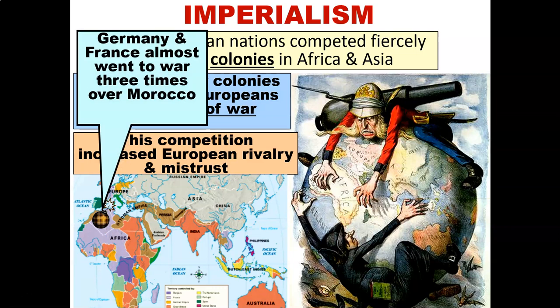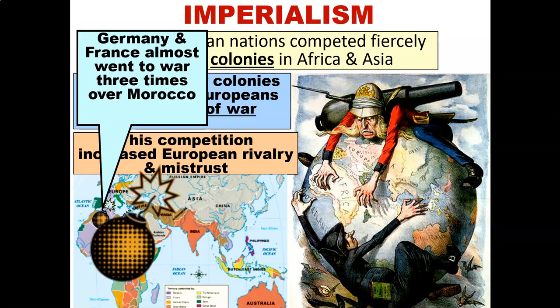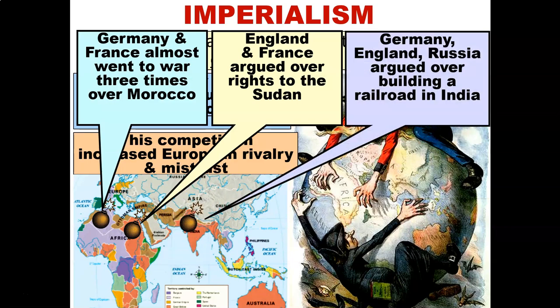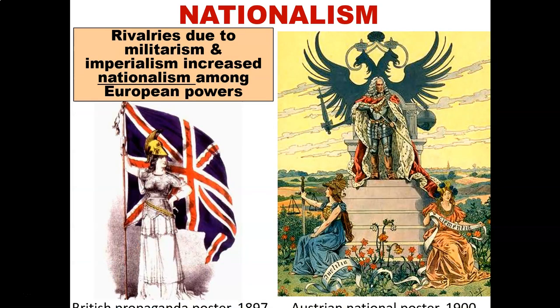Germany and France almost went to war three times trying to gain control over Morocco. England and France argued over the rights to the Sudan. Germany, England, and Russia argued over building a railroad in India. As you can see, we're painting a picture in which there are conflicts that are just about to happen, and ultimately it does happen when World War One begins.